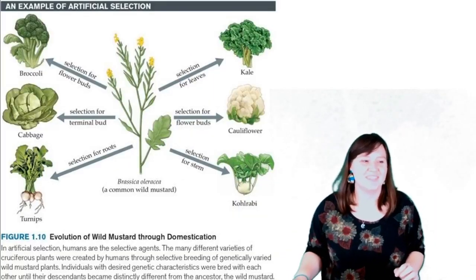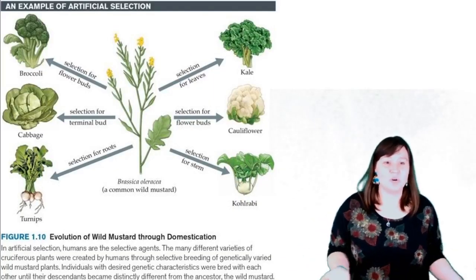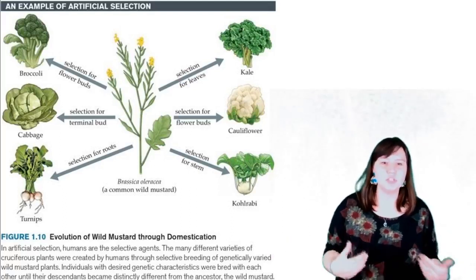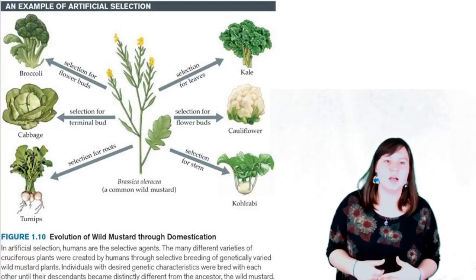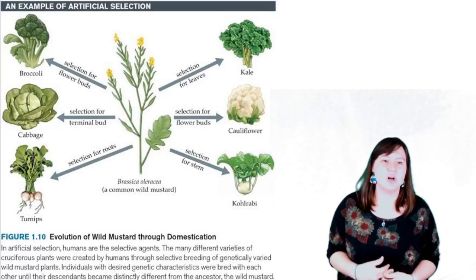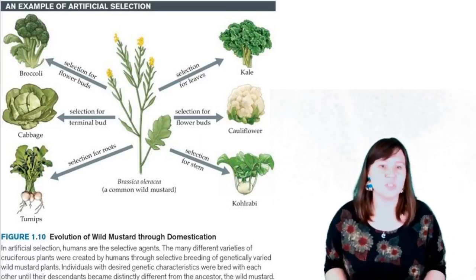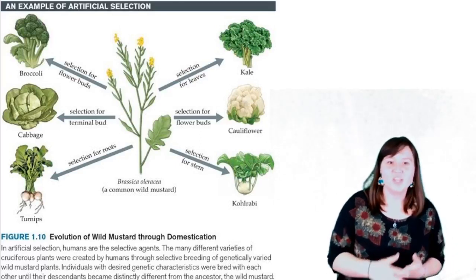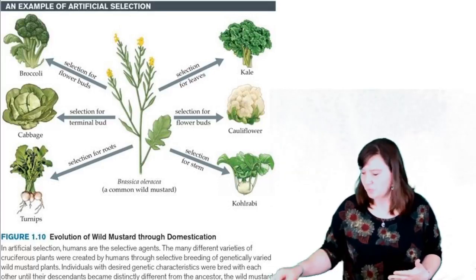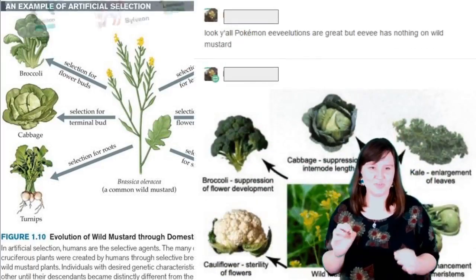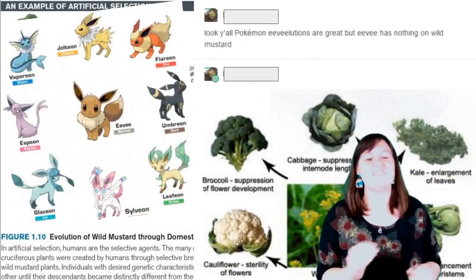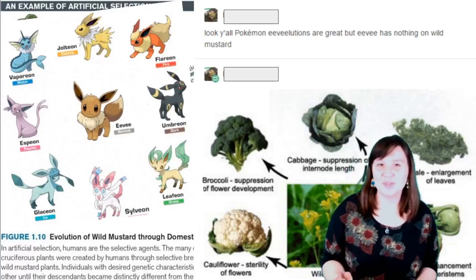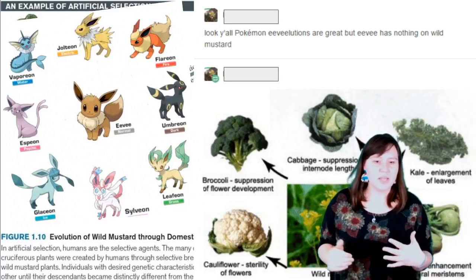This is how evolution occurs: the ancient form of wild mustard has evolved through humans using artificial selection in order to create new varieties of plants and vegetables. Just for fun, I found a picture about Pokémon evolution and wild mustard.